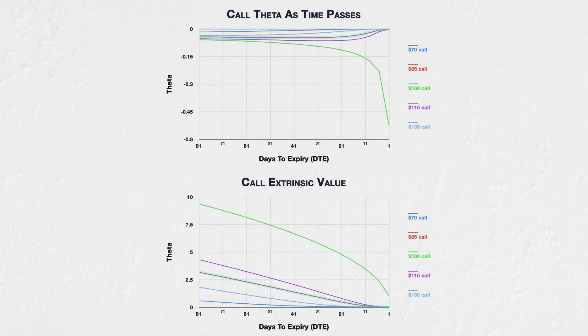For the $85 call, which is in the money, and the $115 call, which is out of the money, the theta behaves in a similar way, but reducing at a slower rate at first, then reducing much faster as we get closer to expiration. On the extrinsic value chart, this translates to a very steady decline in extrinsic value right up until about 15 days to expiry, when the decline slows and the lines flatten off into expiry.